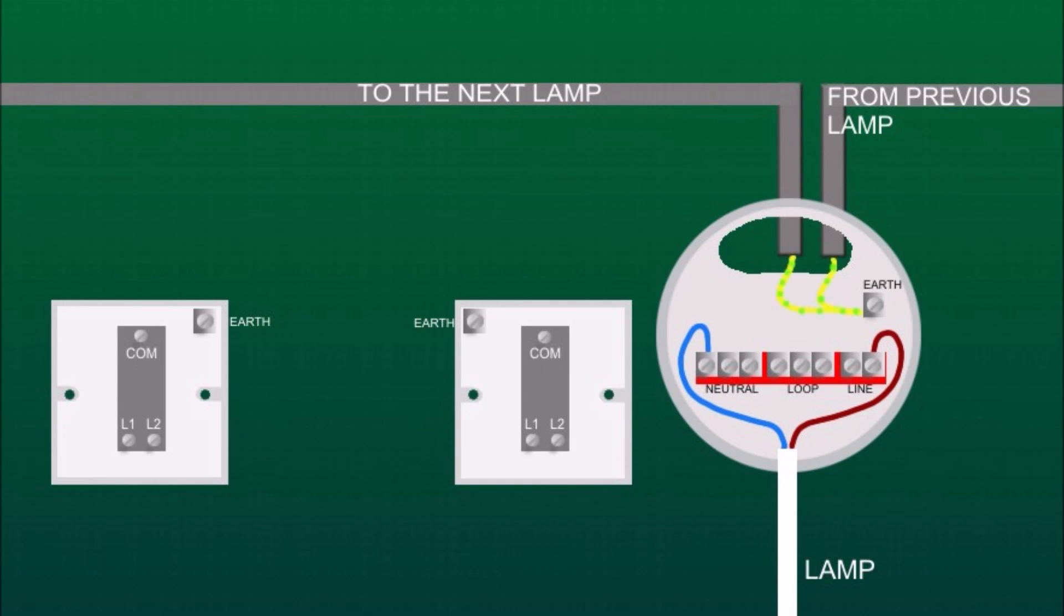So in this ceiling rose, both green and yellow earth wires from these two cables are connected to the earth terminal. Both blue neutral wires to neutral terminal, and both light brown wires to the loop terminal.